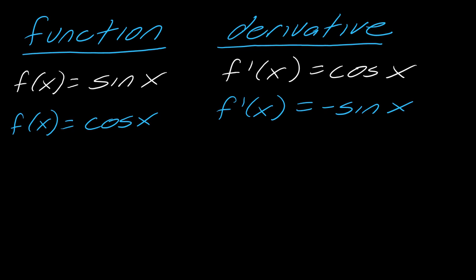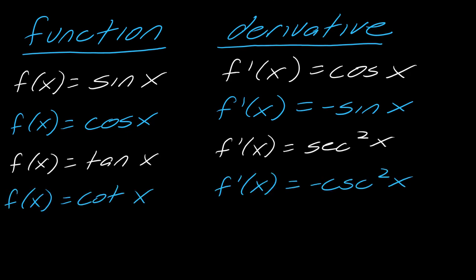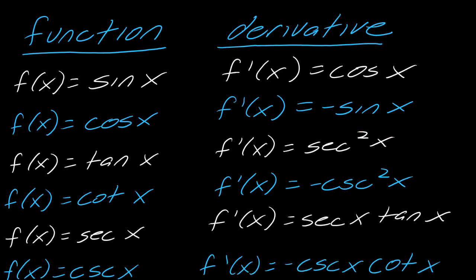So we have the derivatives for sine and cosine, which are listed here. So notice that this one's positive, this one's negative. Then we have tangent and cotangent, again, this one's positive, this one's negative. And then finally, we have secant and cosecant, again positive, negative, so you can kind of notice a relationship between some of the derivatives.